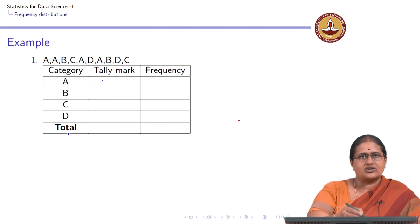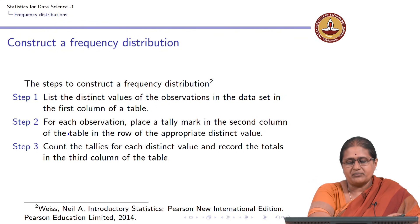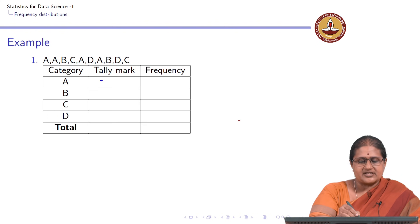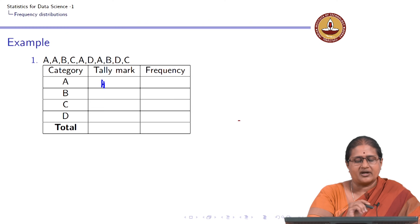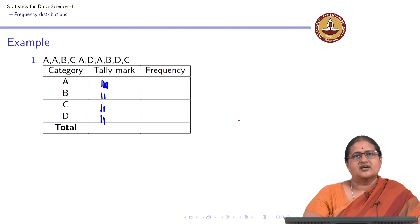For each observation, place a tally mark in the second column. For A, I place a tally mark. The second observation is again A, so another tally mark. The third observation is B, fourth is C, fifth is again A, sixth is D, seventh is A, then B, then D, then C. These are the tally marks we are going to have.